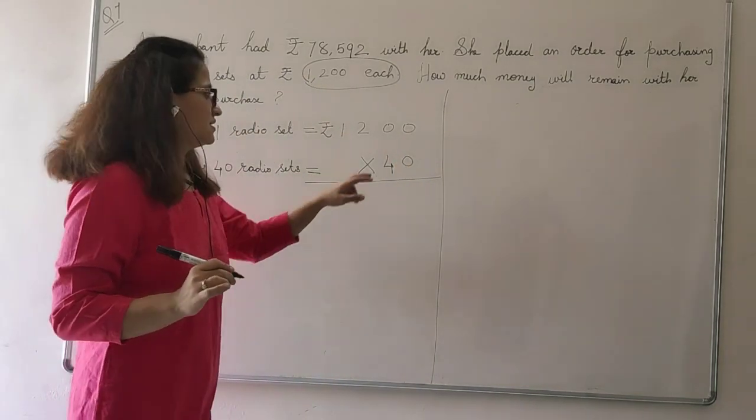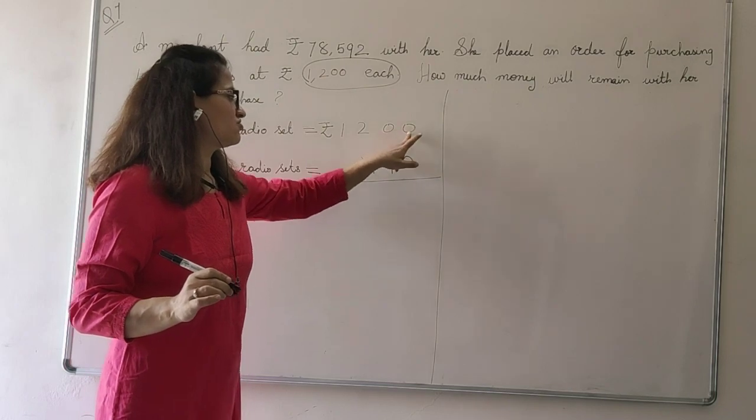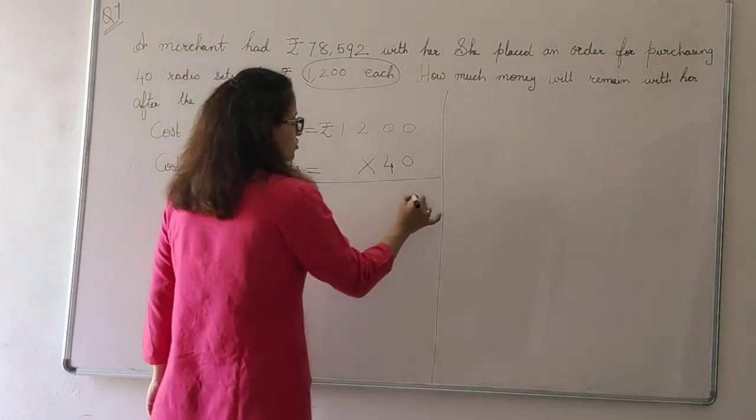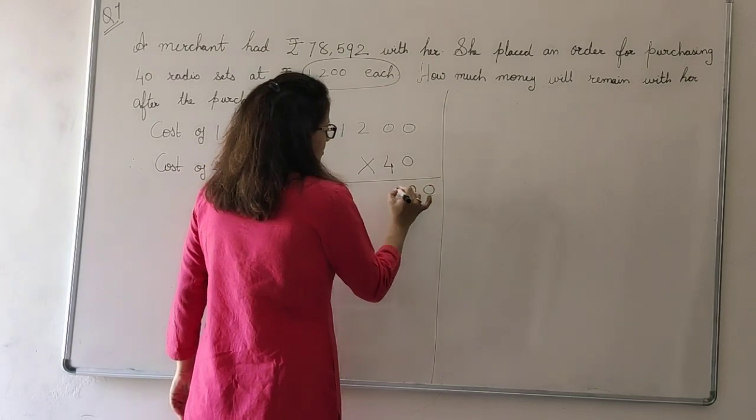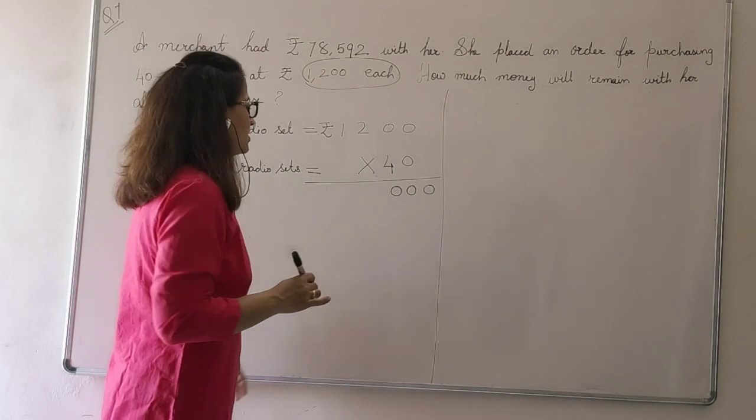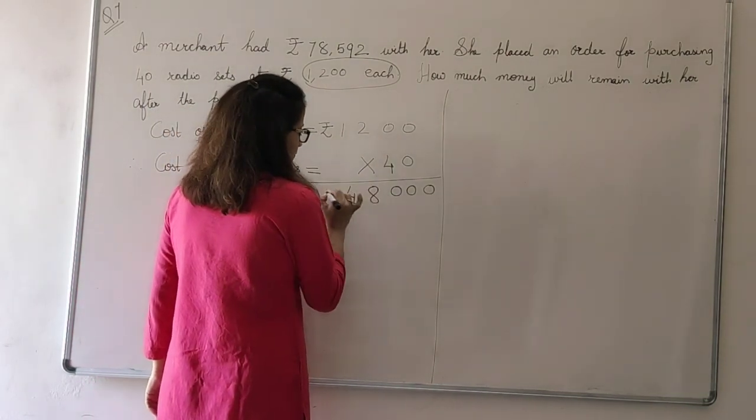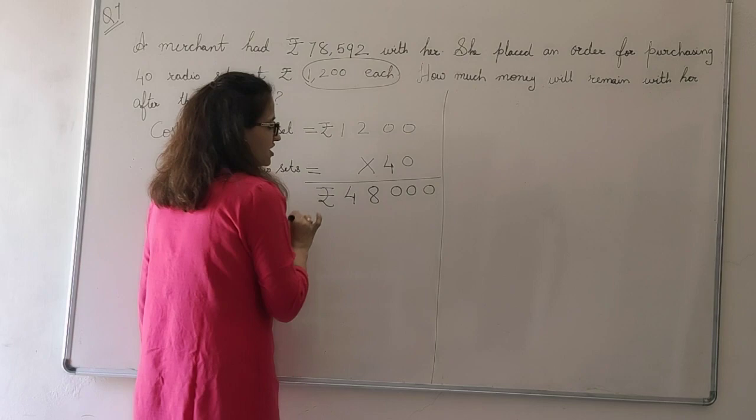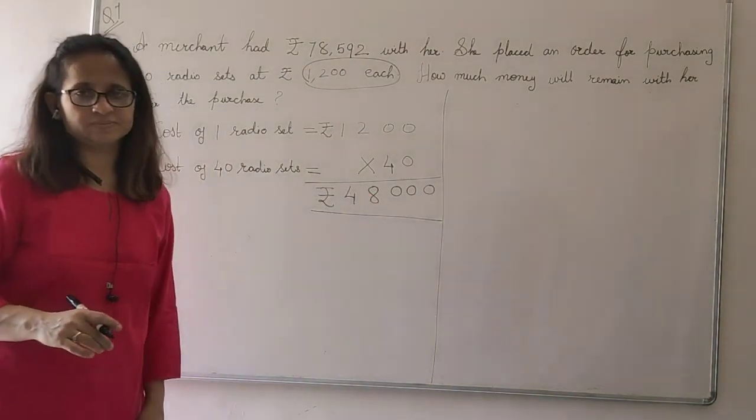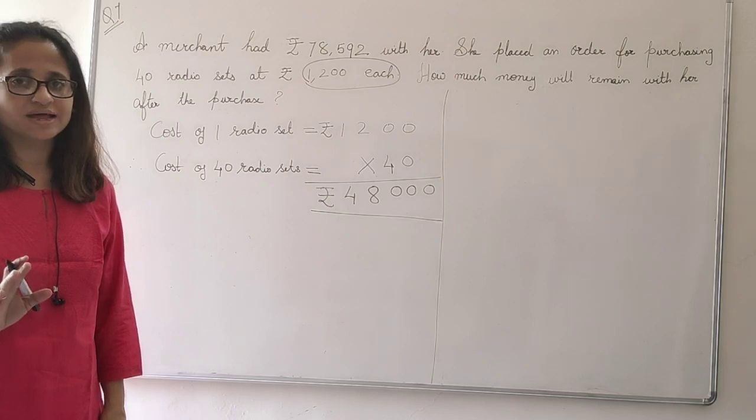Now we know that there are two zeros in 1200 at the end and one zero in 40. So we would put three zeros directly. And then multiply 12 with 4. 12 fours are 48. So what is the price of 40 radio sets? 48,000. I hope you all have understood.